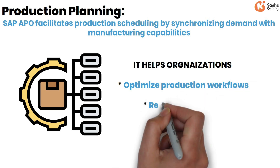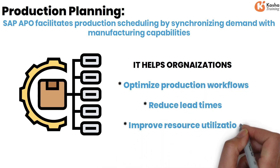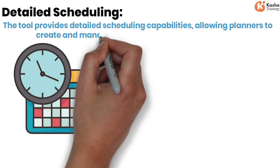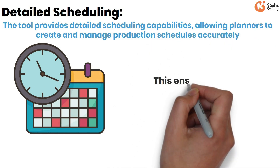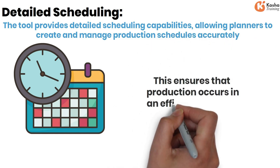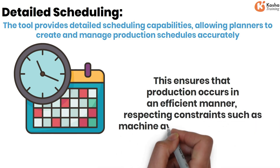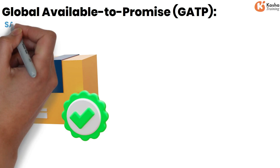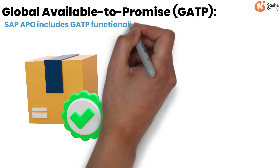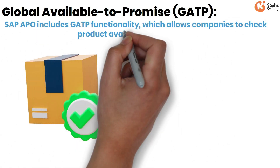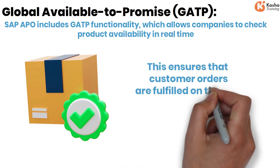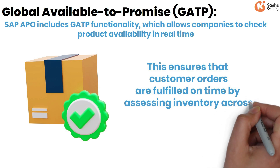For production planning, SAP APO facilitates production scheduling by synchronizing demand with manufacturing capabilities, helping organizations optimize production workflows, reduce lead times, and improve resource utilization. Detailed scheduling capabilities allow planners to create and manage production schedules accurately, respecting constraints such as machine availability and staffing. SAP APO also includes Global Available to Promise (GATP) functionality, allowing companies to check product availability in real time.